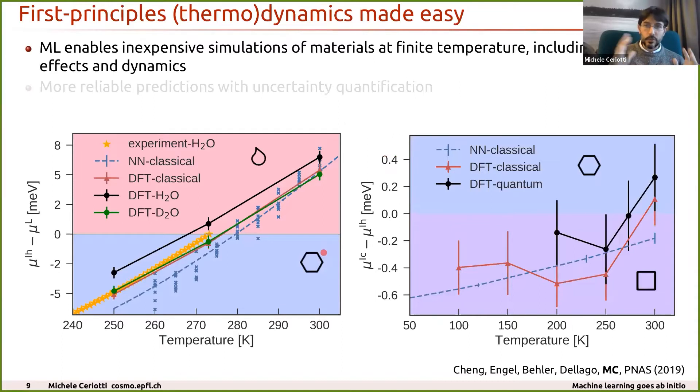For starters, something that used to be one of these heroic tasks - determining finite temperature thermodynamics of a material from first principles - has now become relatively easy. This is something you used to have to write a grant to get access to a supercomputer for half a year. Now it's something you can run in a small cluster at the university level. For example, we were able to compute from first principles the melting point of water with an error of less than five Kelvin, including also the quantum mechanical nature of the nuclei, meaning you can get the difference in melting point between light and heavy water.